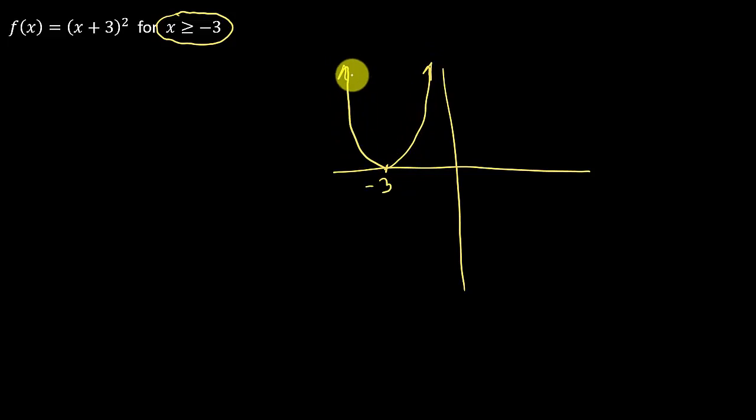Alright, now if you look at this, notice if you draw a horizontal line through this thing, it fails the horizontal line test. So that means this function here is not 1 to 1, so that means it doesn't have an inverse. But what we've done here is we've restricted the domain for x to be greater than or equal to negative 3.